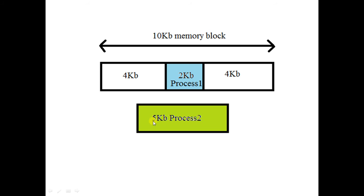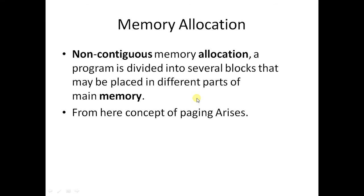Even though the process is only 5 KB and we have 8 KB total, it still cannot be allocated. Why? Because it needs 5 KB of contiguous memory, but only 4 KB of contiguous memory is available — the other 2 KB is used by process 1 elsewhere. So the new process has to wait until process 1 finishes its execution.